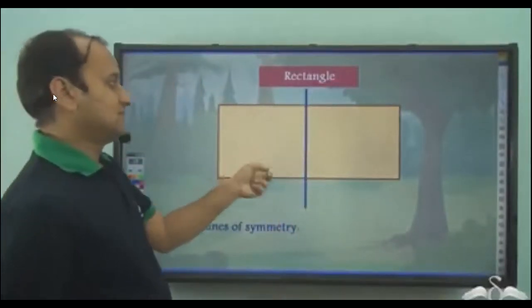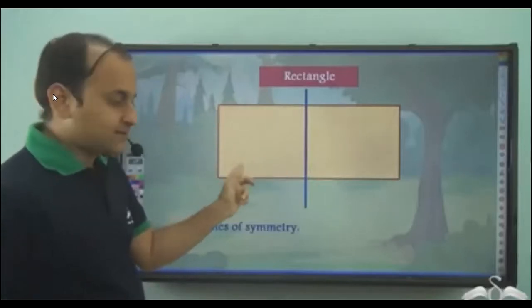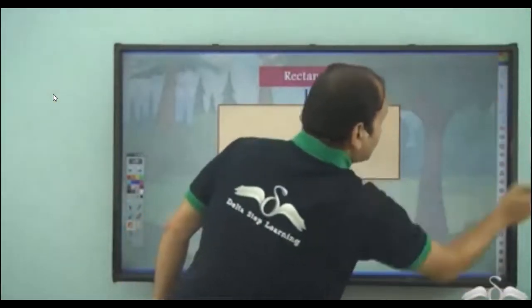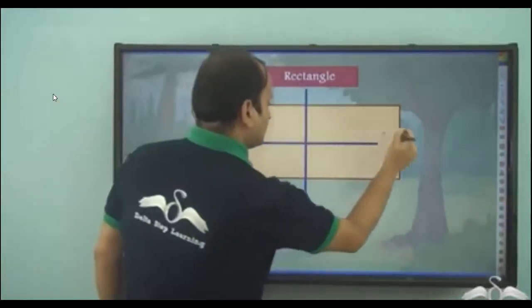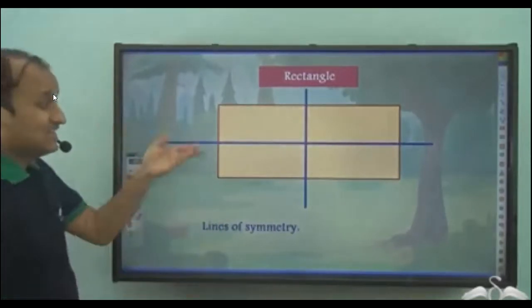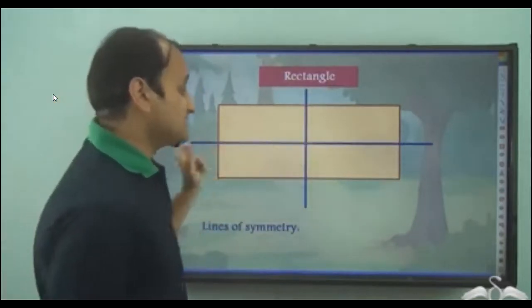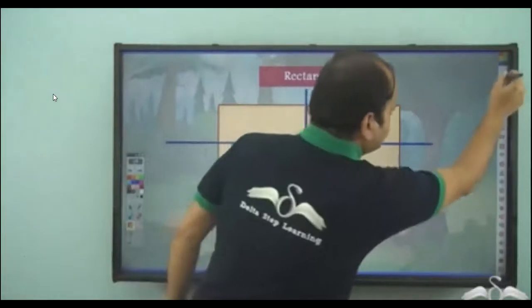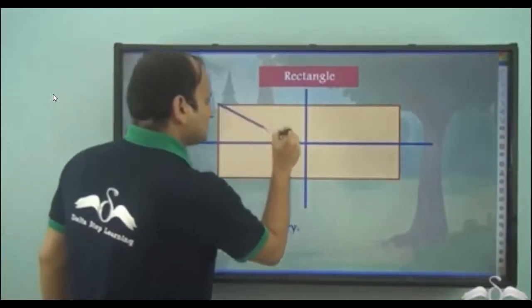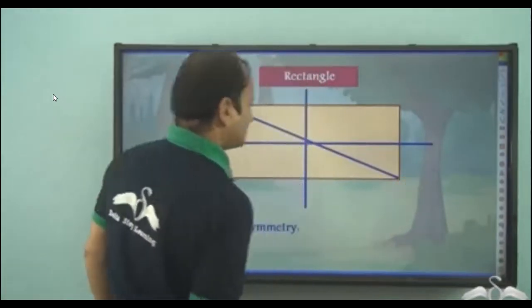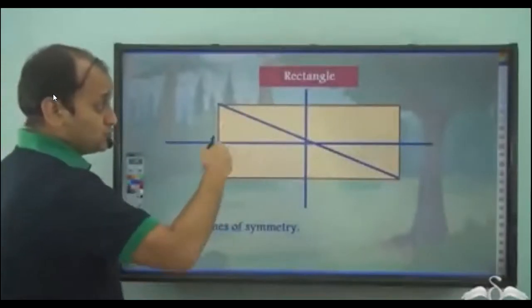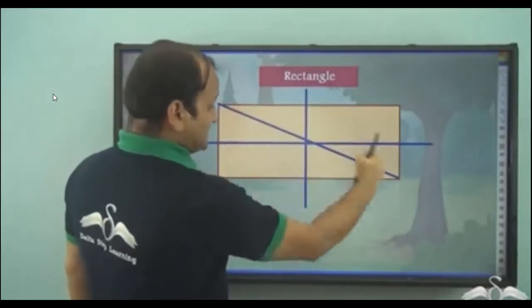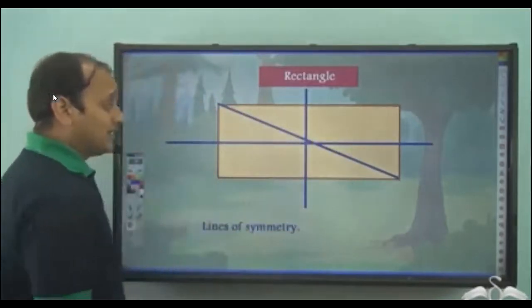This line divides the rectangle into two mirror halves — so this is one line of symmetry. This line also gives us two mirror halves of the rectangle — so this is another line of symmetry. Do we have any other line of symmetry? Let's try. This does not give us two mirror halves — so this is not a line of symmetry.